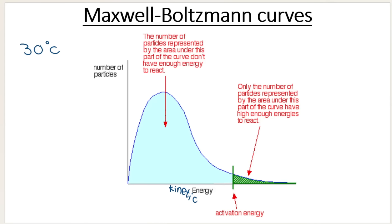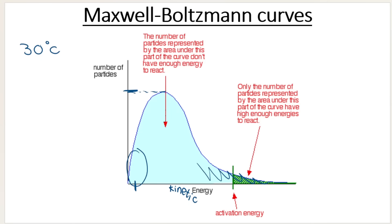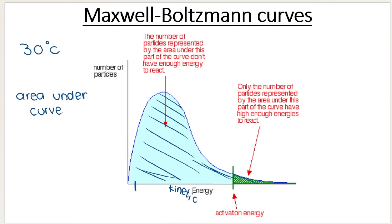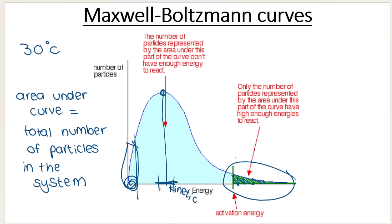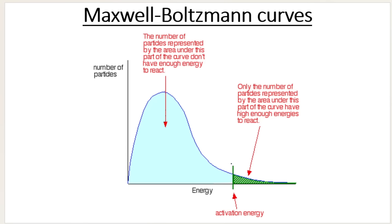Let's pretend again we're at 30 degrees Celsius. What this curve tells us is that some particles have a very low kinetic energy. Most of the particles — up here where the peak is — have a kinetic energy somewhere in between. But you do get some particles that have a higher kinetic energy. The area underneath the entire curve gives the total number of particles in the system.